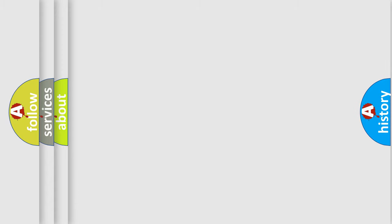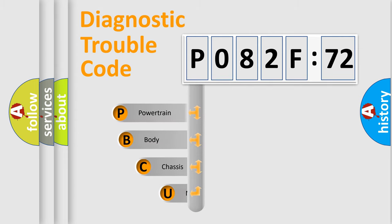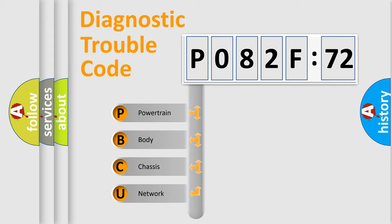We divide the electric system of automobiles into four basic units: Powertrain, Body, Chassis, and Network. This distribution is defined in the first character code.